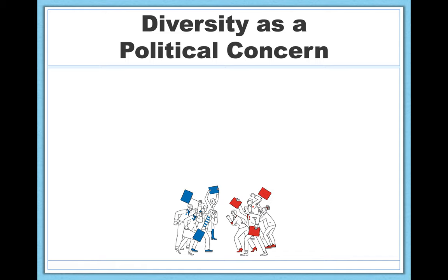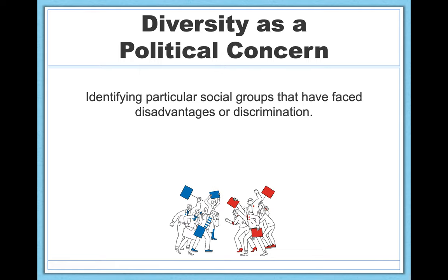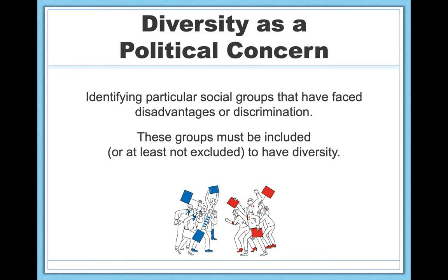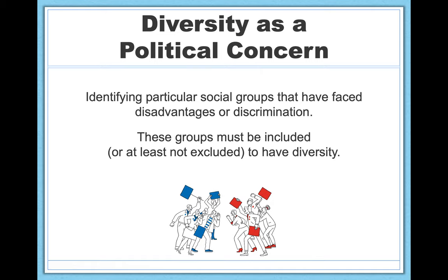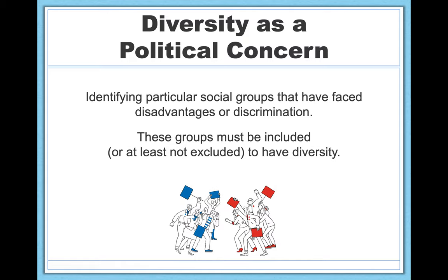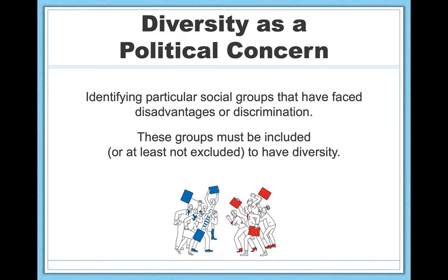Next, we have diversity as a political concern, which involves identifying particular social groups that have faced disadvantages or discrimination historically or presently, and ensuring that they are included — or at the very least, not excluded. Legal definitions typically include women and some minority groups but not others, which is problematic. Also, these legal definitions tend to focus on visible social identities, whereas many social identities may not always be apparent, as we'll discuss in future videos.